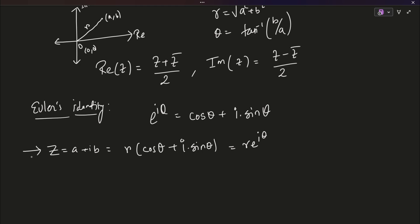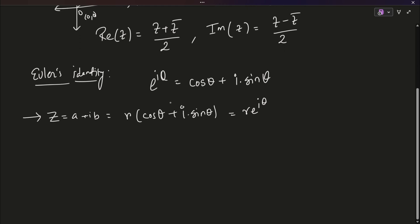This is something you are going to use in your problems. For any complex number, you can substitute it as modulus into e to the power i theta, where theta is its argument. Now, understand this, that mod of e to the power i theta should be mod of cos theta plus i sin theta, which should be equals to 1.